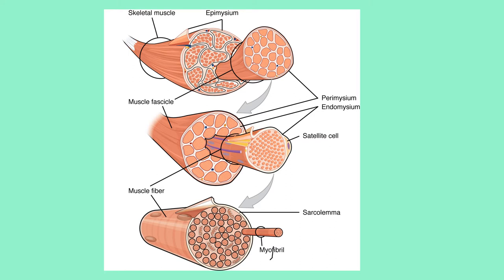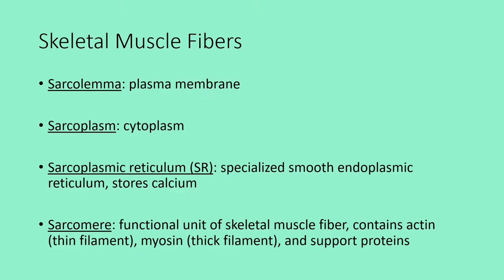Taking several muscle fibers and grouping them together in a bundle forms a muscle fascicle, which is surrounded by the perimysium. Several fascicles together form the entire muscle, which is wrapped in the epimysium. Think of it as: endo is the innermost layer, peri is the middle, and epi is the outermost.